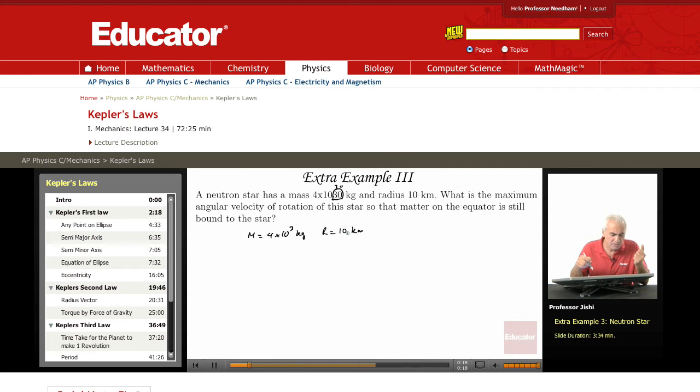What is the maximum angular velocity of rotation of this star so that matter on the equator is still bound to the star? So when this rotates, matter on the equator moves in a circle.